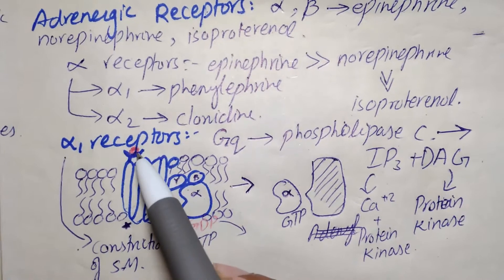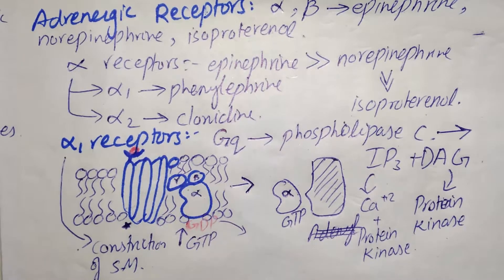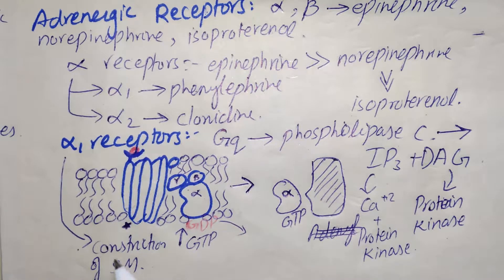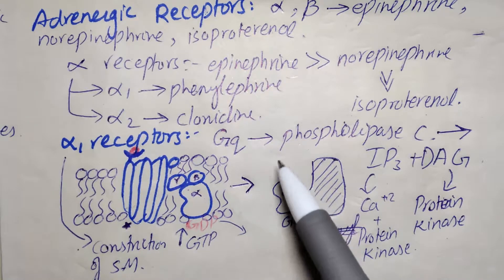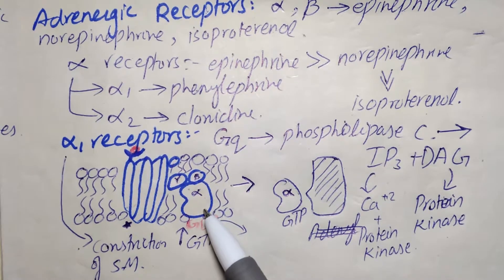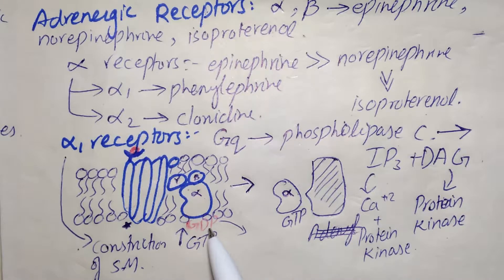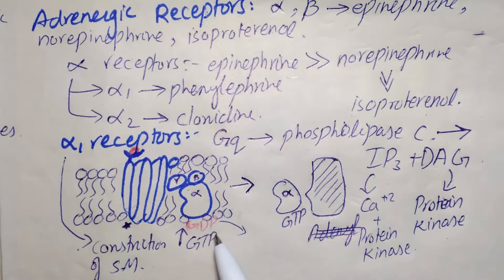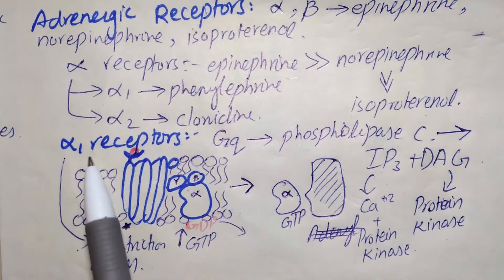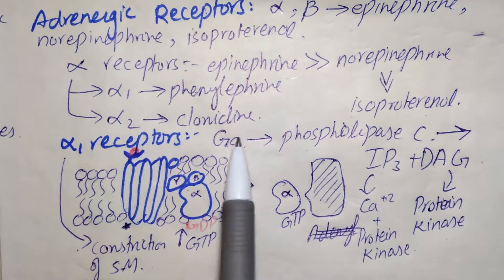When the drug is removed from the receptor, the receptor is no longer in its activated state. The complex returns to its original normal state, and the GTP molecule is converted back to GDP by the release of one inorganic phosphate, restoring the normal resting state of the receptor.